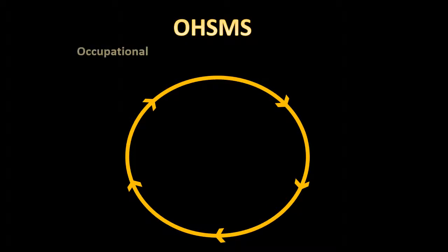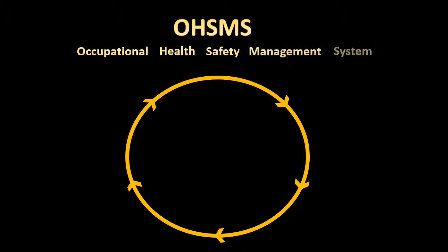An occupational health and safety management system is the system responsible for the practical implementation and enforcement of OHS policies and procedures. Simply put, it's a system to incorporate legislative safety requirements into operations carried out in the workplace.